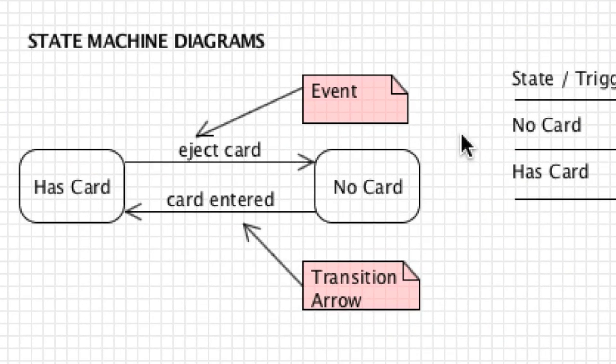State machine diagrams model the changing states of objects and the events that cause these state changes. A state diagram is going to show many different things, but what's on screen here is going to show states and transitions. This whole image can be used as a cheat sheet and it's available underneath the video in a link.